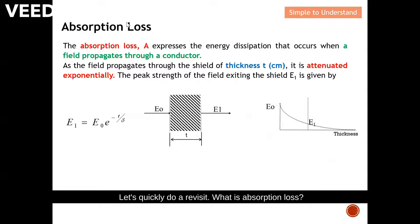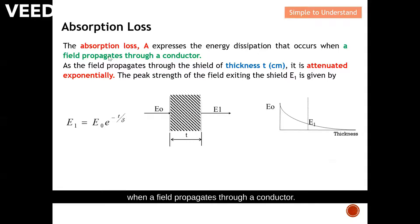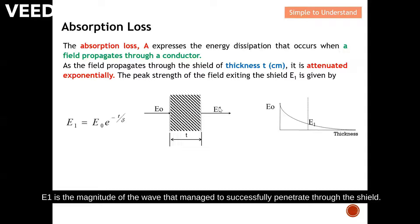Let's quickly do a revisit: what is absorption loss? The absorption loss A expresses the energy dissipated that occurs when a field propagates through a conductor. This is an incident wave that wants to penetrate through the conductor, and E1 is the magnitude of the wave that managed to successfully penetrate through the shield.